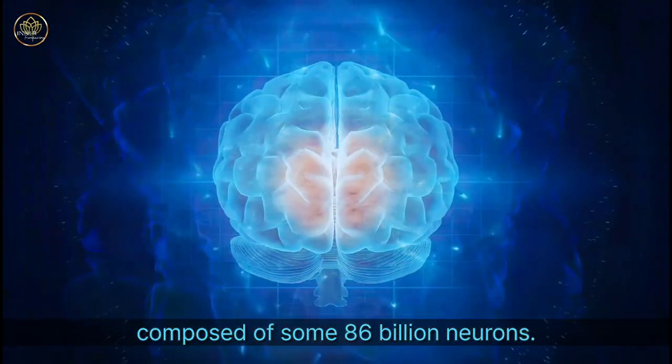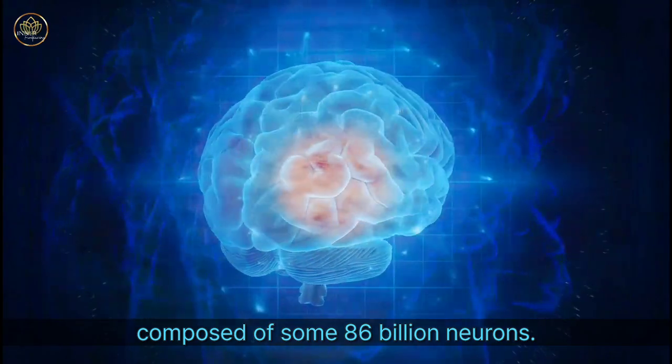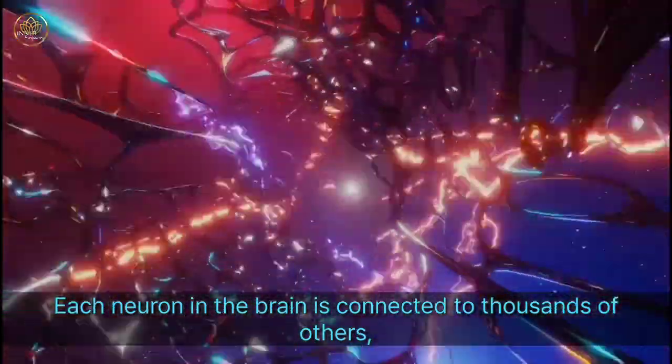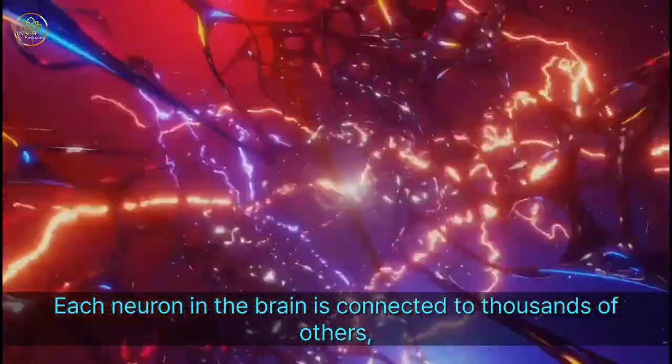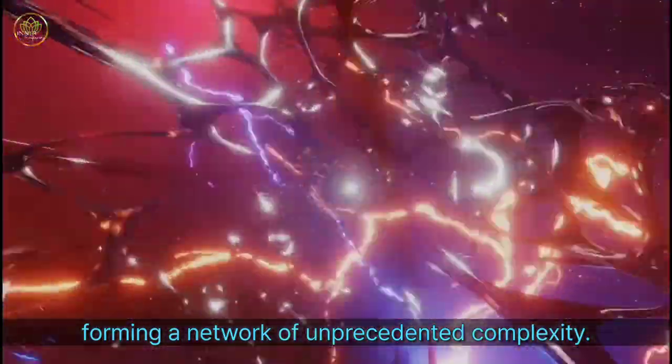The human brain, composed of some 86 billion neurons. Each neuron in the brain is connected to thousands of others, forming a network of unprecedented complexity.